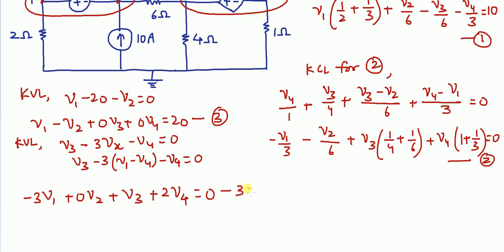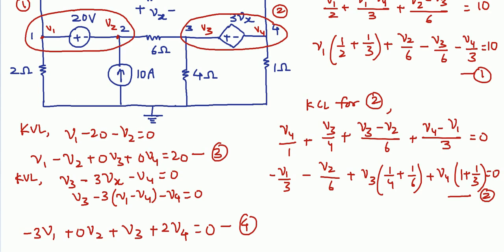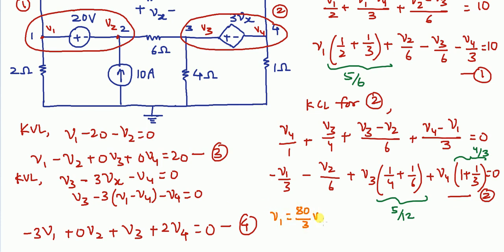Now we have four unknowns and four equations. By solving the four equations, the solution is: V1 = 80/3 volts, V2 = 20/3 volts, V3 = 520/3 volts, and V4 = −140/3 volts. That is how we do super node analysis.